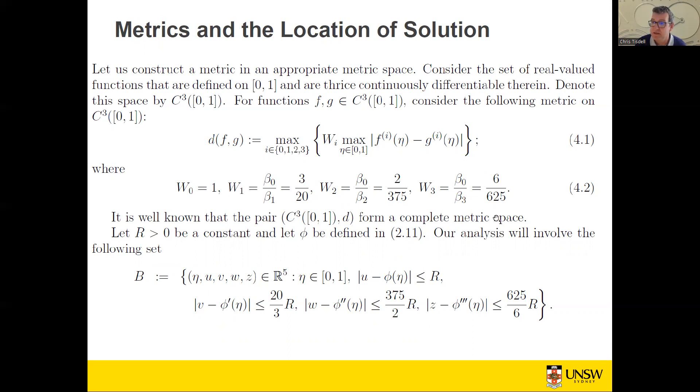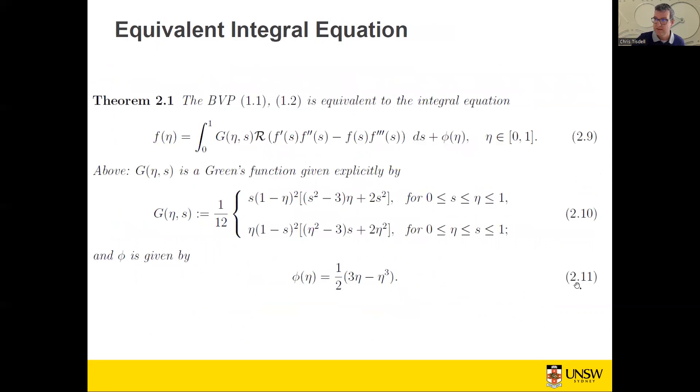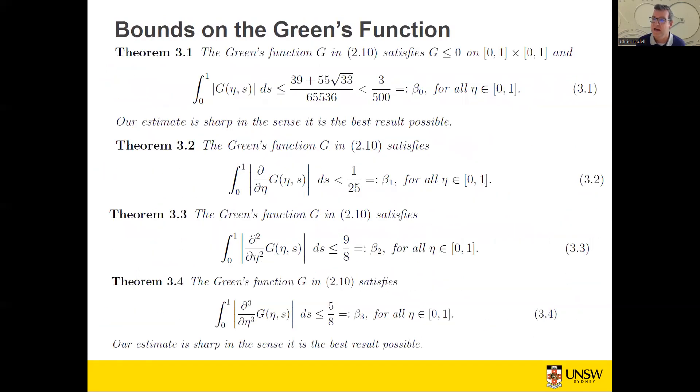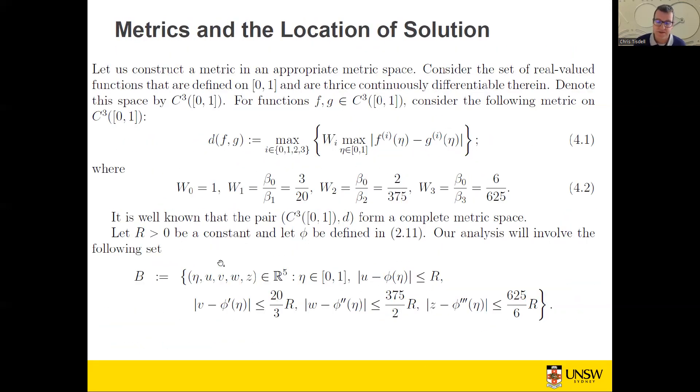This pair does form a complete metric space. What we're going to do is show that there is a solution to this problem 2.9, which is equivalently a solution to 1.1, 1.2. And we're going to show that the graph of this solution lies in this set. I'll show you what that looks like a bit later.